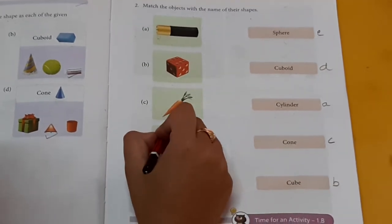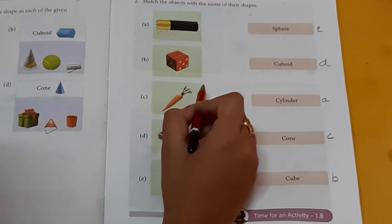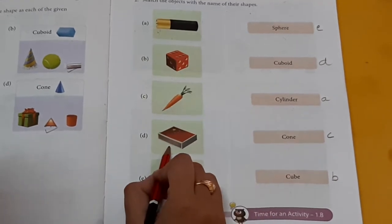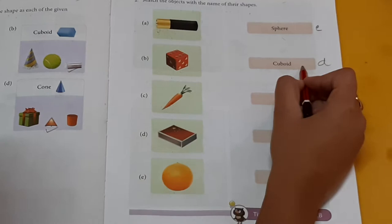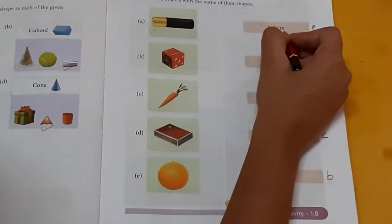Cone. Carrot is cone shape. Match box. Match box is cuboid shape. Orange. Orange. Sphere shape.